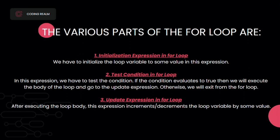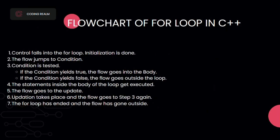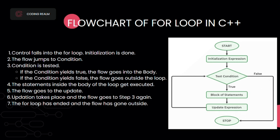The parts of the for loop are: first, the initialization expression — we initialize the loop variable to some value. Second, the test condition — if the condition evaluates to true, we execute the body of the loop and go to the update expression; otherwise we exit the for loop if the condition is false. Third, the update expression — after executing the loop body, this expression increments or decrements the loop variable by some value.